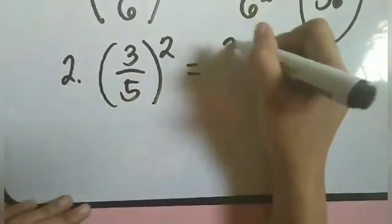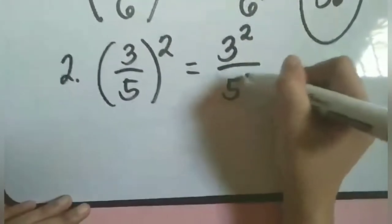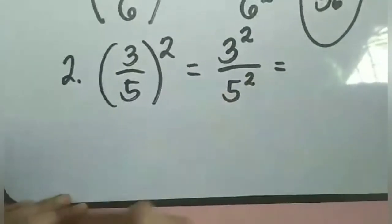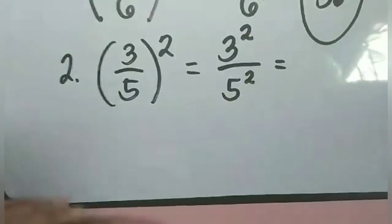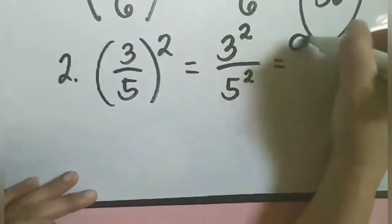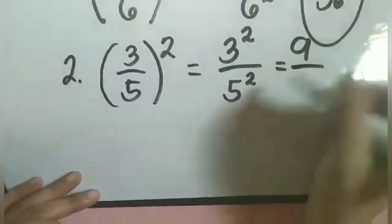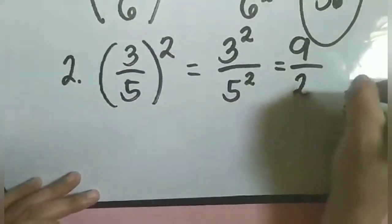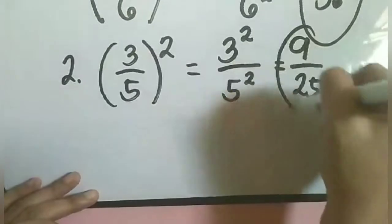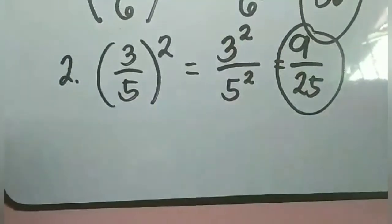So magiging 3 raised to 2 over 5 raised to 2. Simplify: 3 squared is equal to 9 (3 times 3), and 5 squared is equal to 25 (5 times 5). So the answer is 9 over 25.